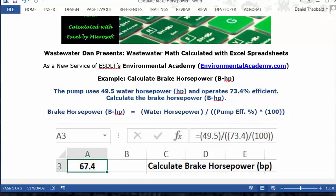Set it as bold and centered, then go to the formula bar and type this formula: equal sign, open parenthesis, 49.5, close parenthesis, division key, open parenthesis, 73.4, close parenthesis, division key, open parenthesis, 100, close parenthesis. Then press enter or the return key.